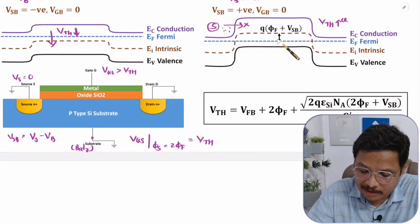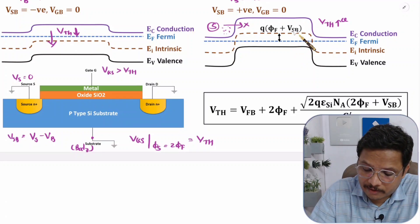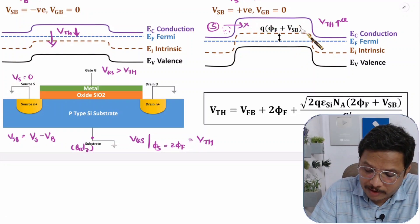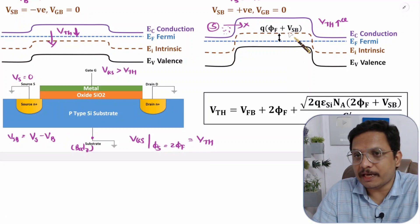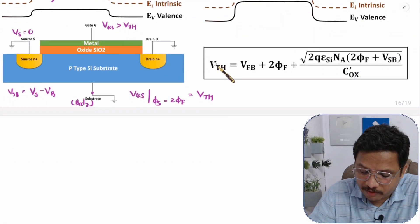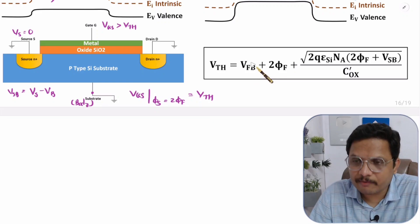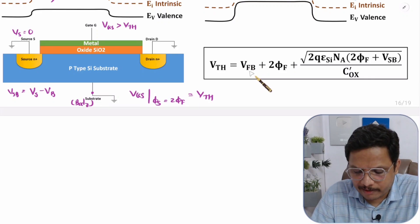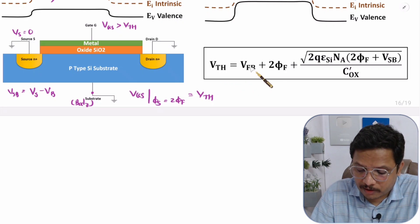From the diagram you can understand how threshold voltage changes. Previously the resistance was as per q·φf (Fermi energy). But as you increase VSB by positive amount, this resistance increases — now it is q·φf plus VSB. So the threshold voltage equation, considering flat band voltage for imperfections, is: VTH = VFB + 2φf + √(2·q·εSi·NA·(2φf + VSB)) / C'OX.